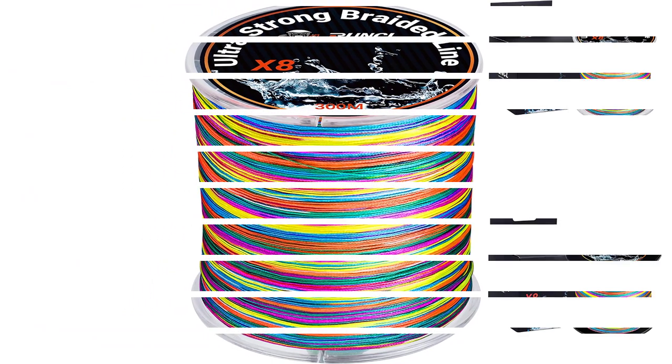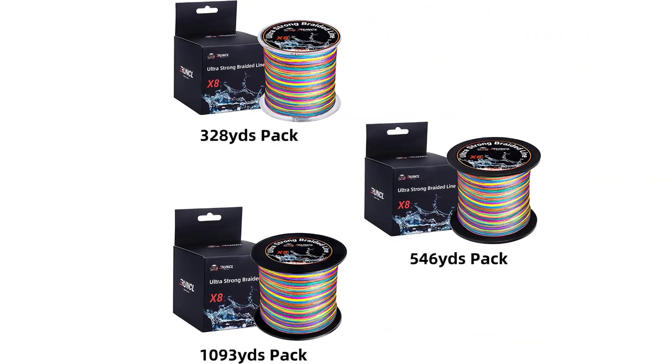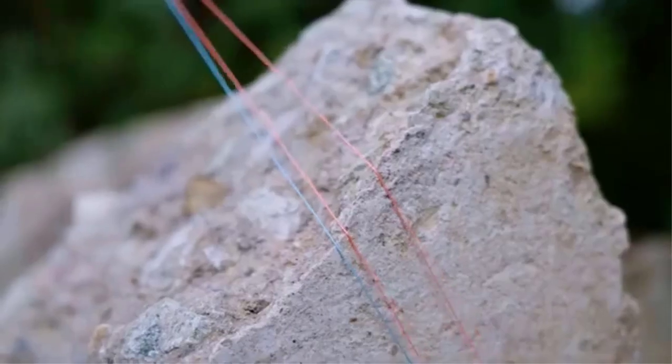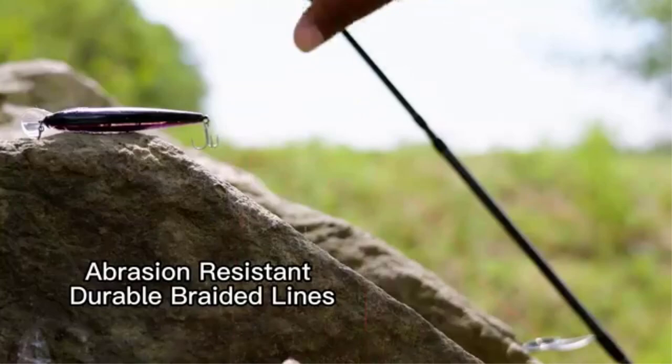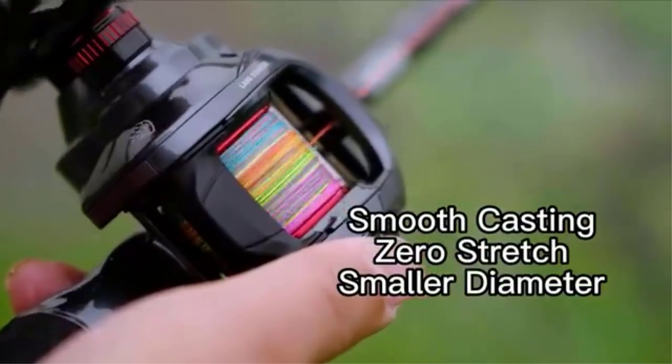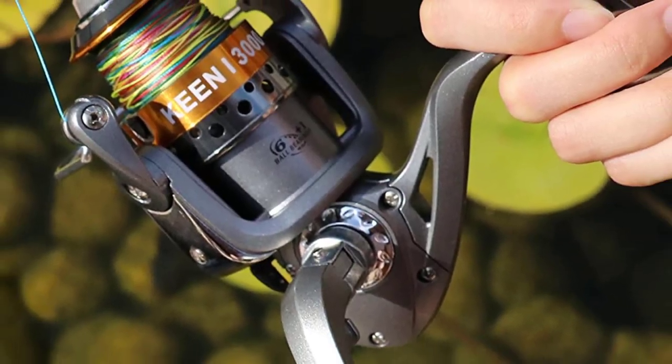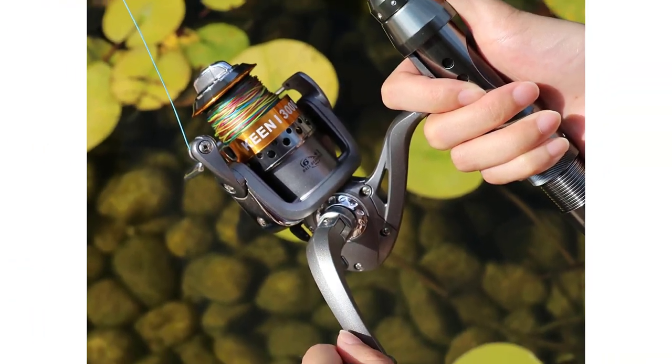Is the line a little thicker than your average four-strand braid? Sure. But not as much as you might think. And it's pretty smooth as well. This is a premium line and it will stand up to the task. If you've never used multicolored lines before, you might be sold after using RUNCL's. The colors switch every foot and a half, letting you gauge cast distance and depth much more easily.